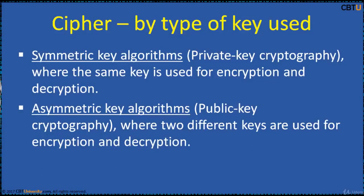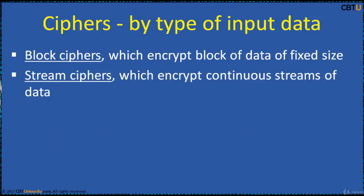Cipher by type of key used: symmetric and asymmetric. Symmetric key algorithms, that is private key cryptography, use the same key for encryption and decryption. Asymmetric key algorithms, that is public key cryptography, use two different keys. Cipher by type of input data: block ciphers, which encrypt a block of data of fixed size, and stream ciphers, which encrypt a continuous stream of data.